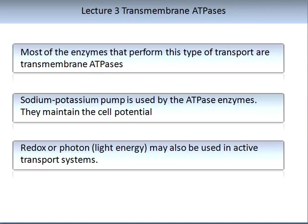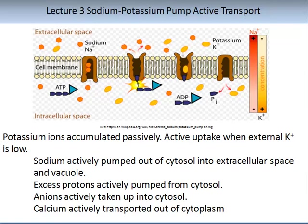A component of the transmembrane ATPases is a sodium and potassium pump used by these enzymes to help maintain the cell potential as compounds are moved against a concentration gradient. Redox or photon energy, a measurement of light energy, may also be used in active transport systems. The sodium and potassium pump is used in active transport: potassium ions accumulate passively, with active uptake when external potassium is low; sodium activity is pumped out of the cytosol into the extracellular space and the vacuole; excess protons are actively pumped from the cytosol; ions are actively taken up into the cytosol; and calcium is actively transported out of the cytoplasm.